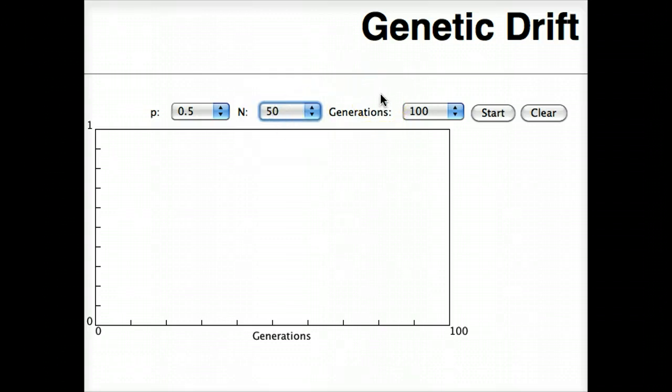Next, you're looking at the number of generations. Here you can also choose between 50 generations, 100 or 250.